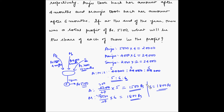So basically, even though Anju contributed the maximum amount of money, because the duration for which she invested was the lowest, she got the lowest profit amongst the three. And even though Sanju invested less money compared to the other two, because he was invested for a longer time, his share was equal to that of Manju.